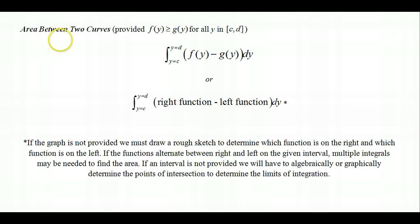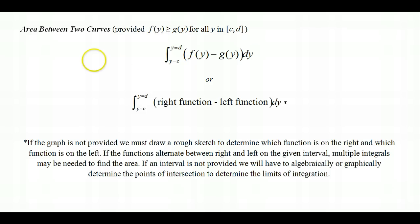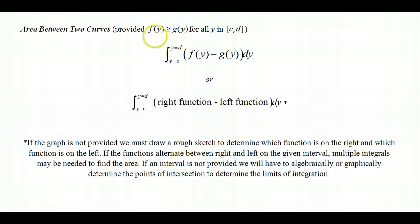The formula for finding the area between two curves: provided that f(y) is greater than g(y) for all y in the interval from C to D, the limits of integration are y values — y = C to y = D. Since f(y) > g(y) means f(y) is more to the right, instead of top minus bottom we deal with a right minus left situation. The formula is the integral from y = C to y = D of f(y) minus g(y) dy. These are functions of y, not functions of x.